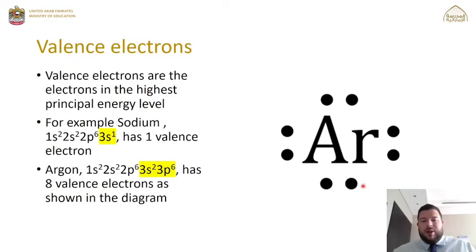The diagram shows the electron dot structure we've looked at previously. For argon, there are 8 electrons if you count them from the outside.